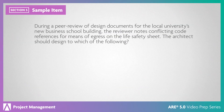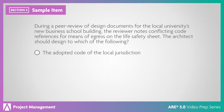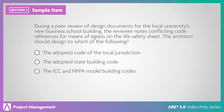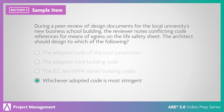During a peer review of design documents for the local university's new business school building, the reviewer notes conflicting code references for means of egress on the life safety sheet. The architect should design to which of the following? The adopted code of the local jurisdiction; the adopted state building code; the ICC and NFPA model building codes; or whichever adopted code is most stringent. The correct answer is whichever adopted code is most stringent.